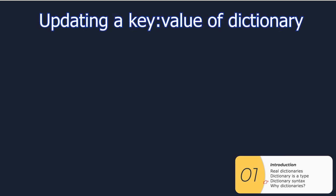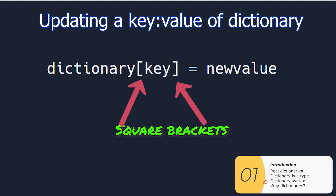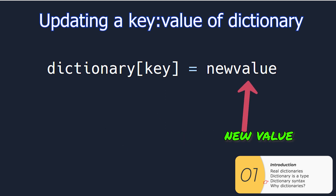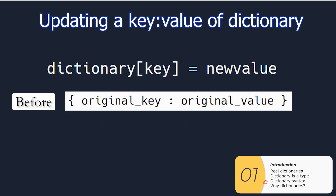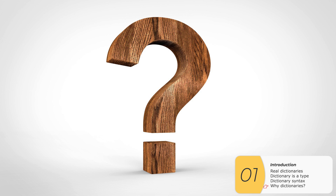If I want to update the value of a key, it's pretty similar. I go dictionary, square brackets, the key I want to update, equals, and then the new value. So before, if it looks like this with the original key and the original value, after it will look like this with the original key but the new value.